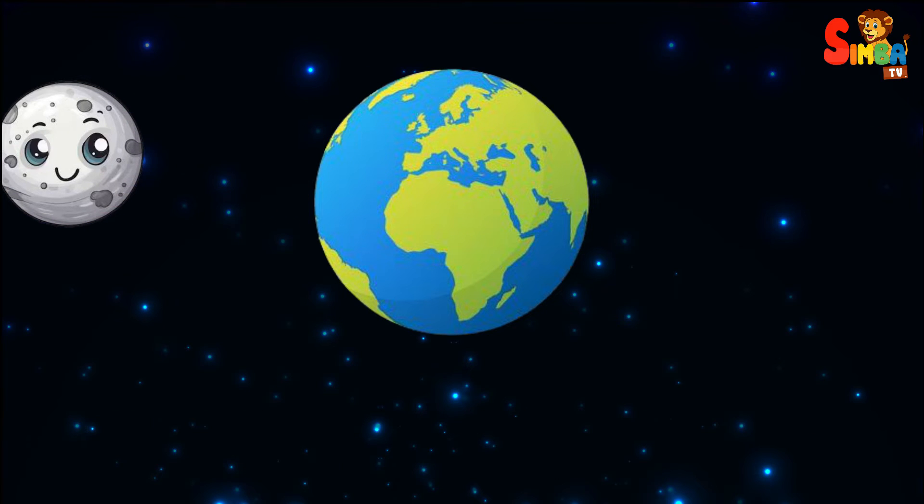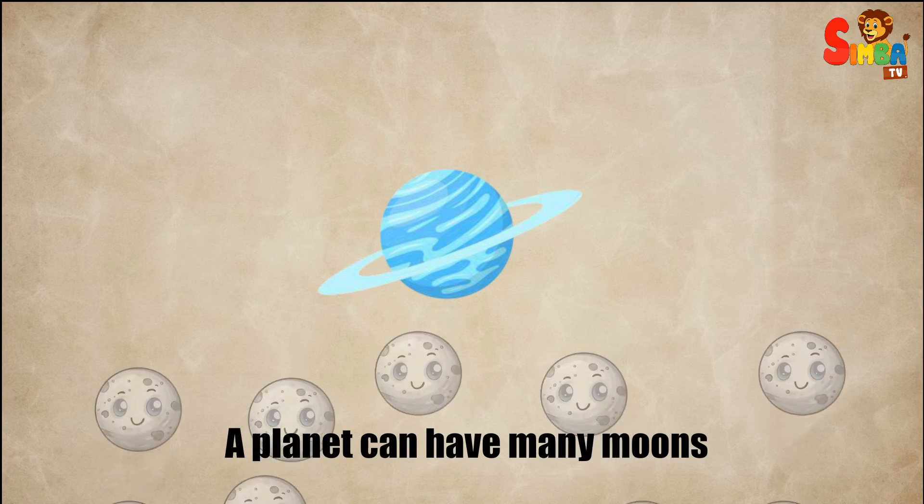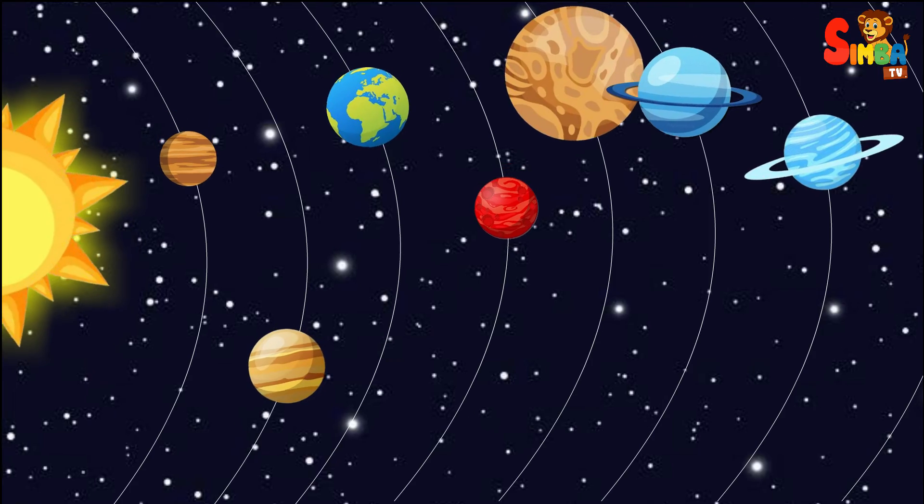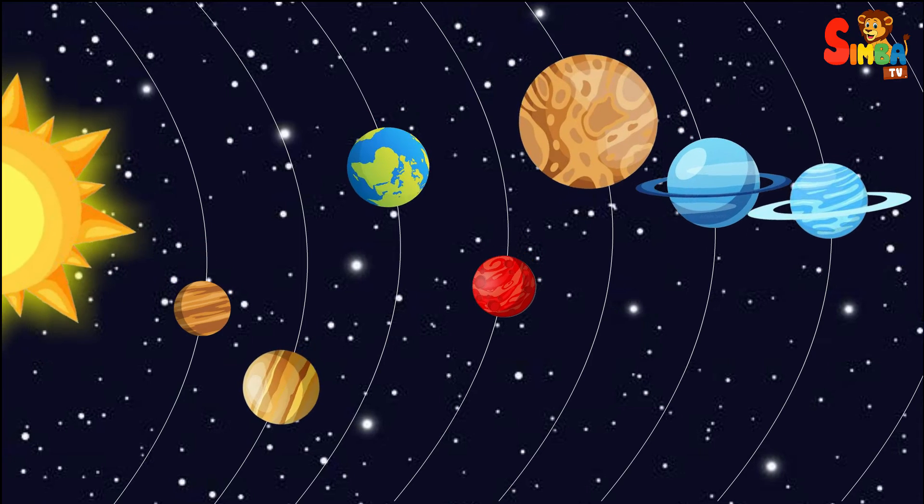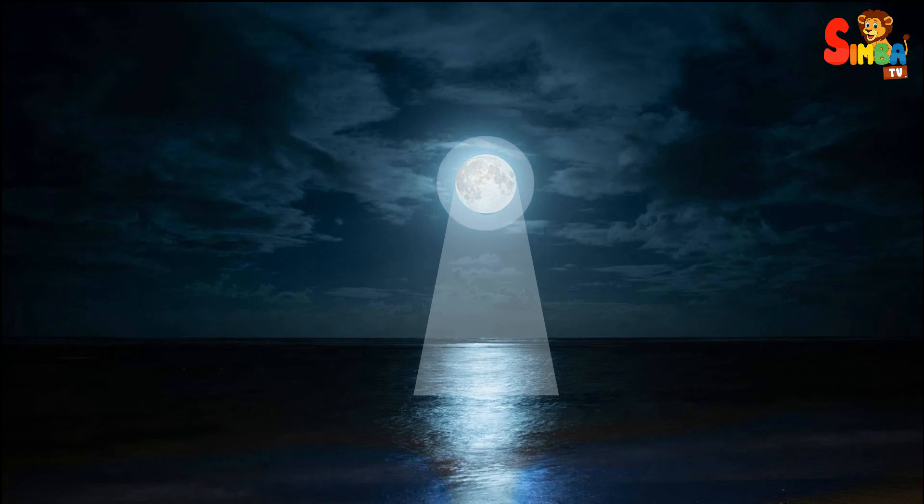Additionally, while a planet can have many moons, a solar system typically has a limited number of planets. Lastly, moons usually have little to no atmosphere, whereas planets can possess substantial atmospheres.